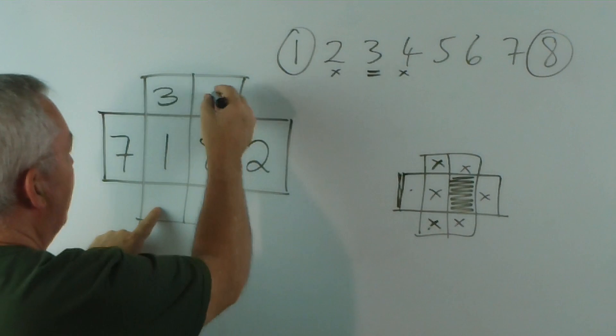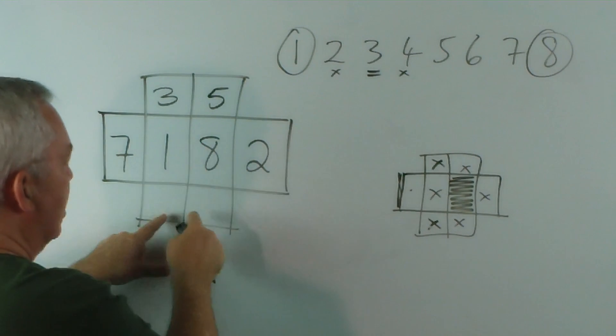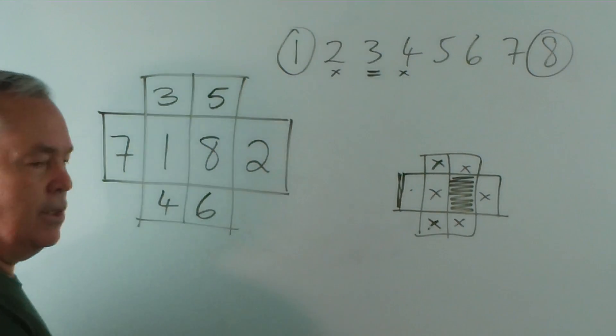The four can't go there, so it must be over here somewhere. And wherever the four goes, the five must go up here. The six must come down, and the six obviously can't go next to the seven.